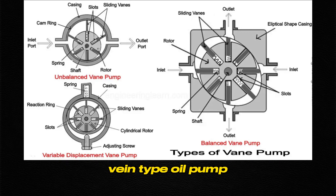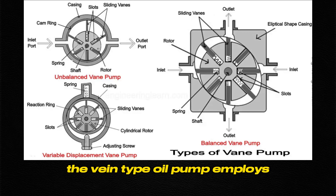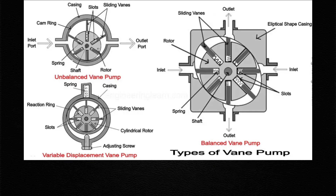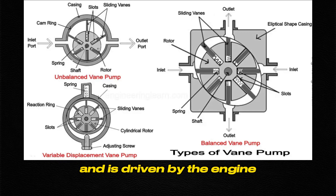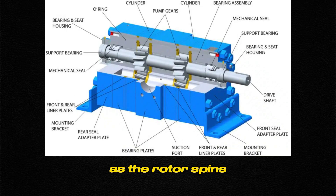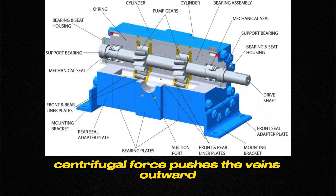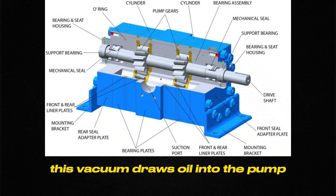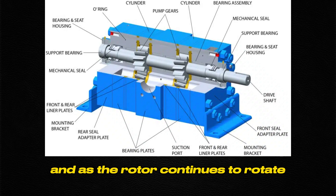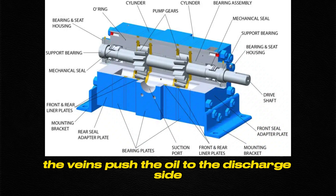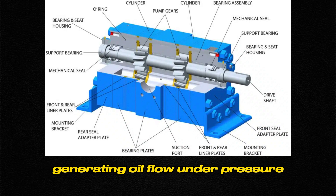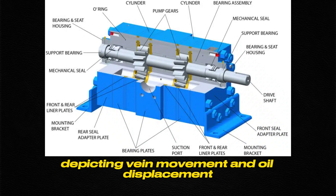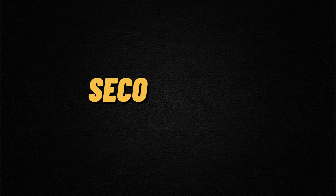The vane-type oil pump employs vanes that slide in and out of slots in a rotor. The rotor is connected to the oil pump shaft and is driven by the engine. As the rotor spins, centrifugal force pushes the vanes outward, creating a vacuum in the suction area. This vacuum draws oil into the pump, and as the rotor continues to rotate, the vanes push the oil to the discharge side, generating oil flow under pressure.